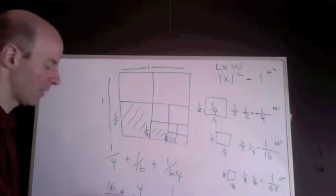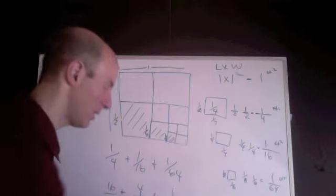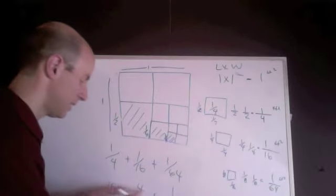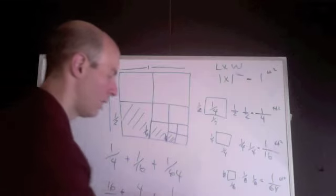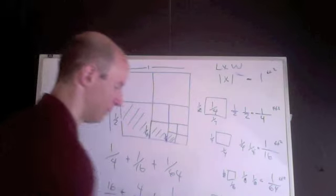Now, I can add up my fractions. I have fractions of all common denominators. This works out very nicely. 16 plus 4 is 20, plus 1, 21, out of 64.